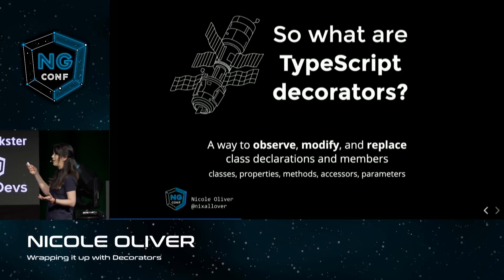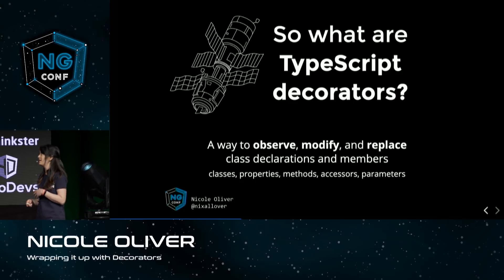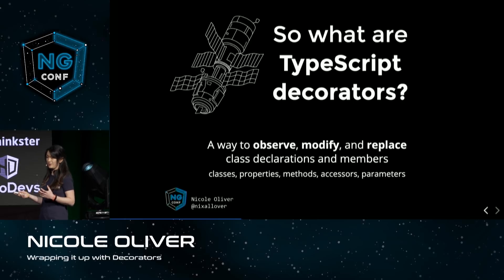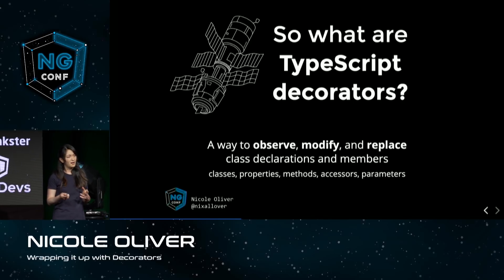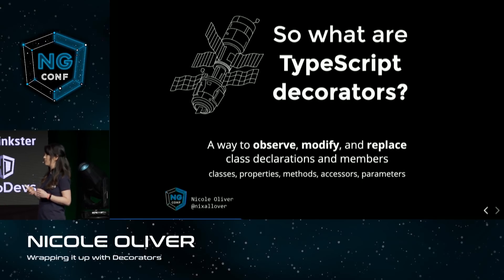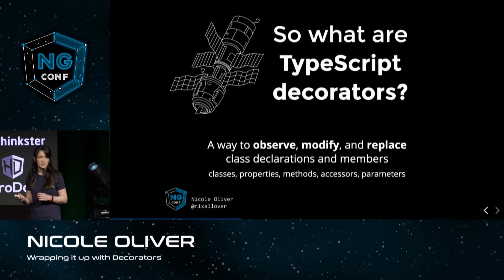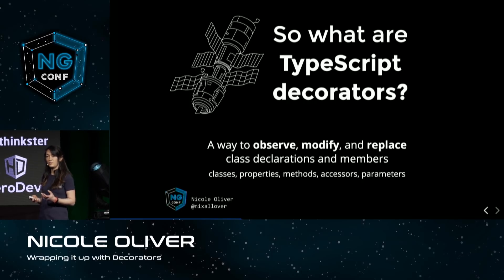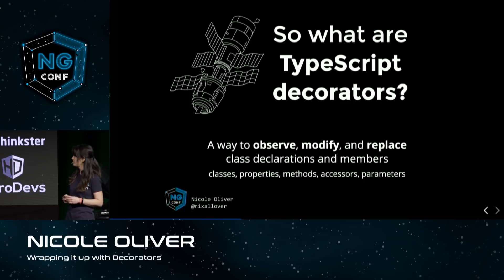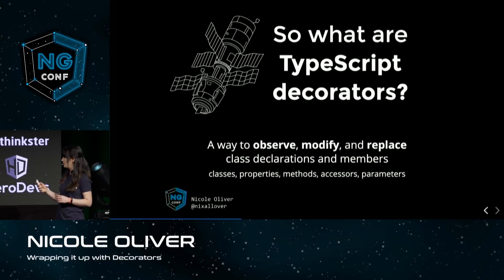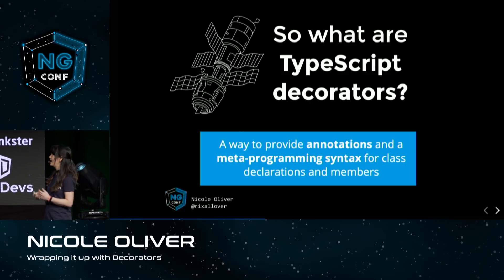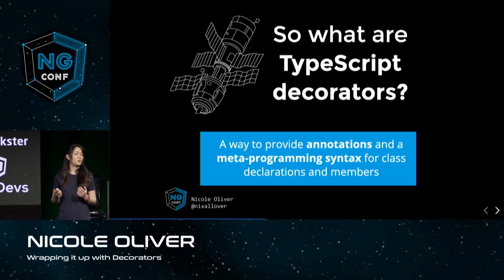Now that we've seen how to implement them, let's step back and think about what TypeScript decorators actually are. TypeScript decorators are a way to observe, modify, and replace class declarations and members. We can apply decorators in TypeScript to classes, properties, methods, accessors such as get and set, and parameters like constructor arguments or method arguments.